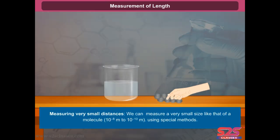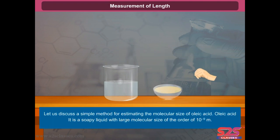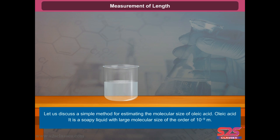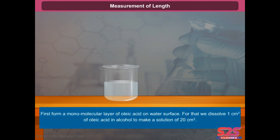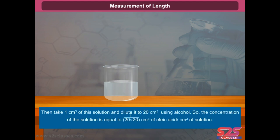For measuring very small distances, we can measure a very small size like that of a molecule using a special method. Let us discuss a simple method for estimating the molecular size of oleic acid. Oleic acid is a soapy liquid with large molecular size of the order of 10 to the power of minus 9 meters. First, form a monomolecular layer of oleic acid on water surface. Dissolve 1 cm³ of oleic acid in alcohol to make a solution of 20 cm³, then take 1 cm³ of the solution and dilute it to 20 cm³ using alcohol. The concentration of the solution equals 1/(20×20) cm³ of oleic acid per cm³ of solution.